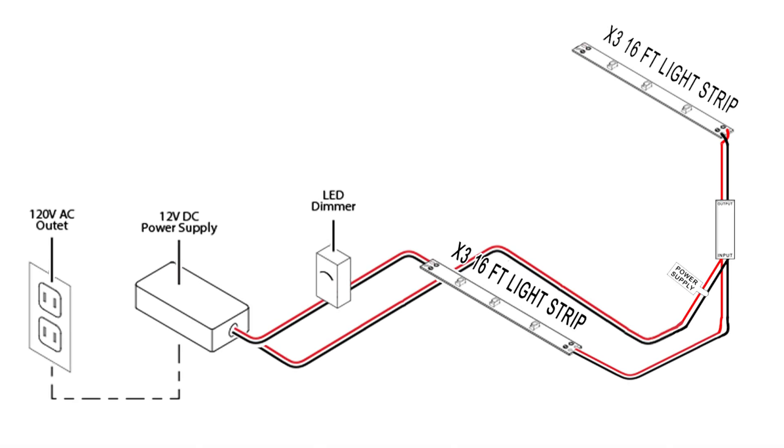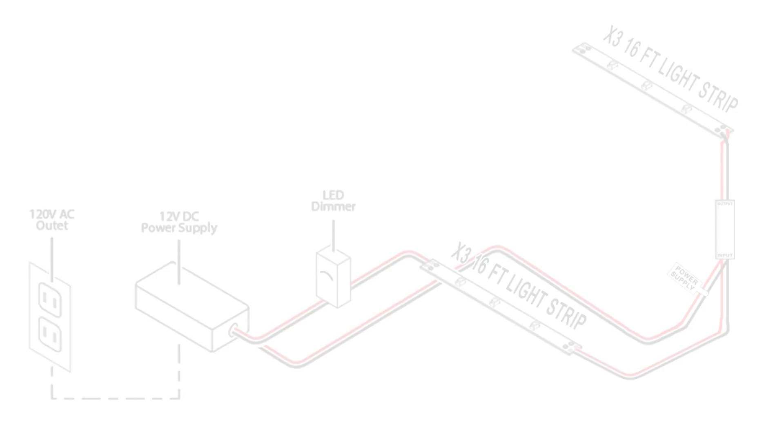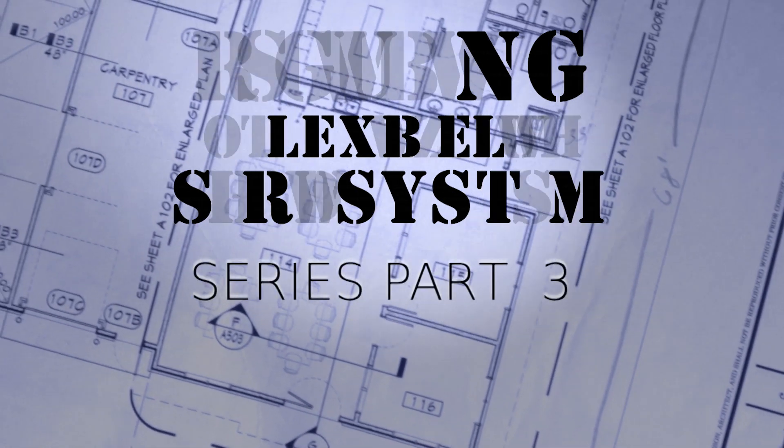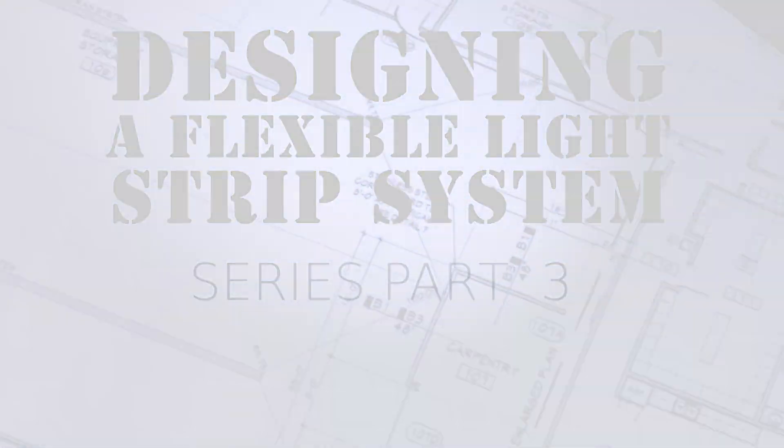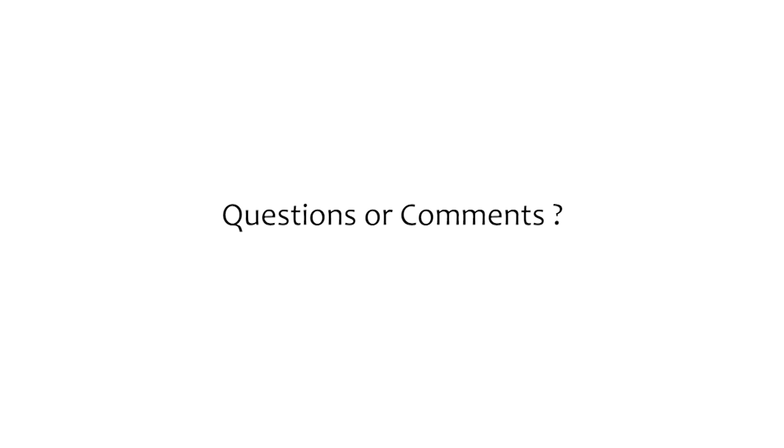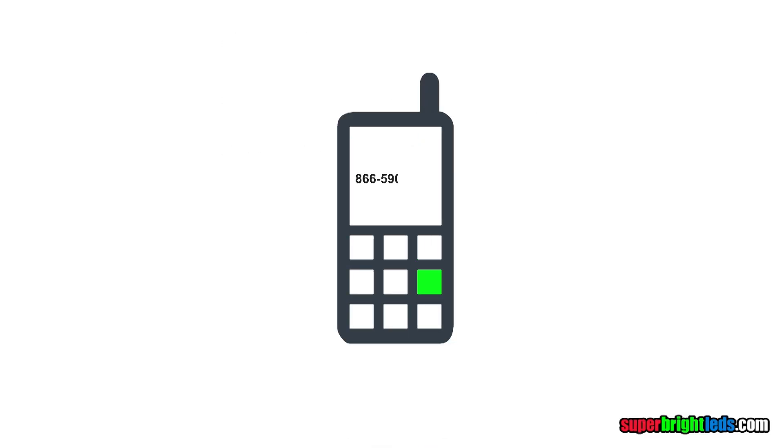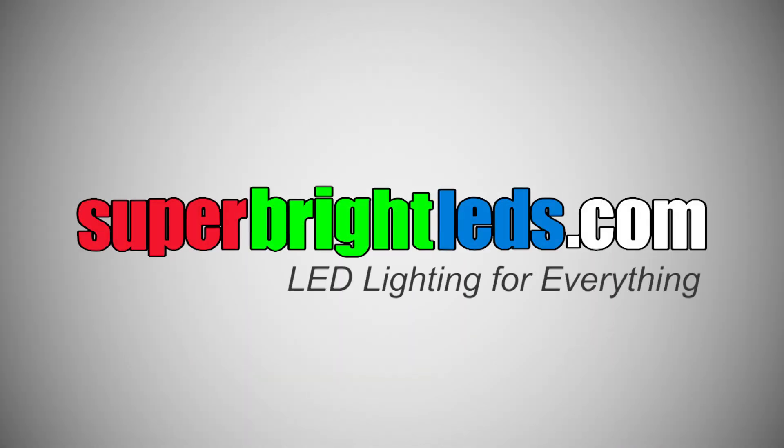Now we have figured out what it is that we need to do to control our strip. Next time we will discuss how to put all of these pieces together to have a fully operational flexible light strip system. If you have other questions or comments, don't hesitate to give us a call at the 800 number listed on the website or send us an email. Thank you for shopping at SuperBrightLEDs.com.